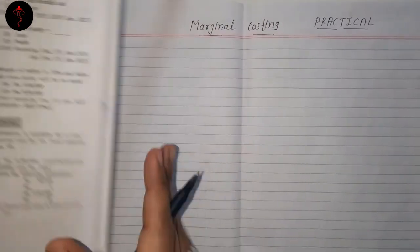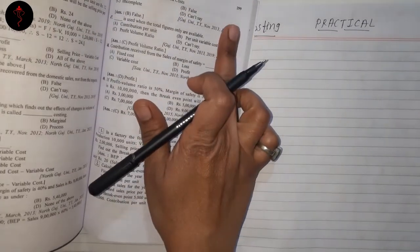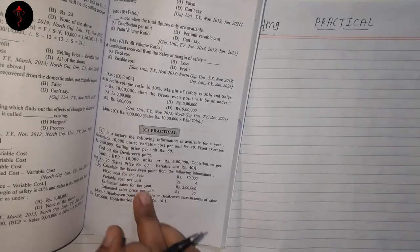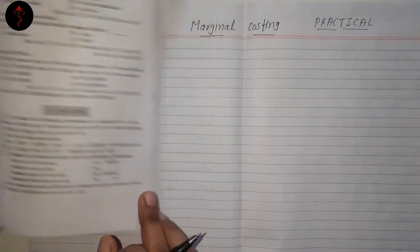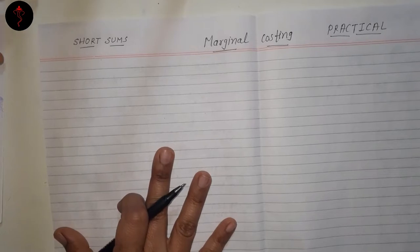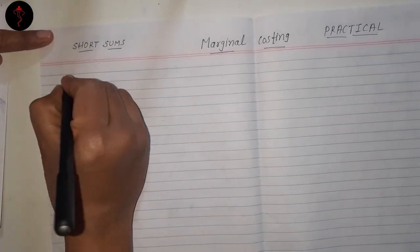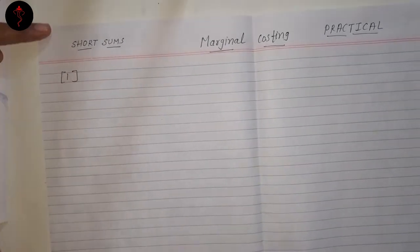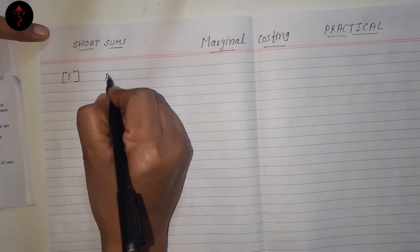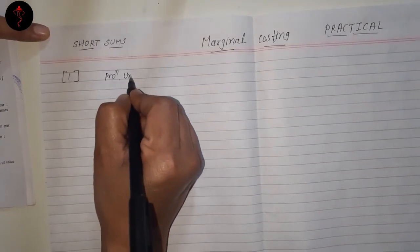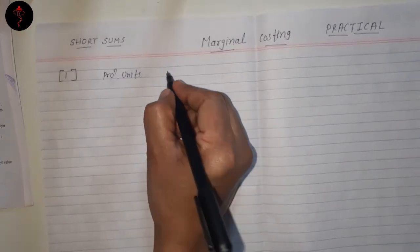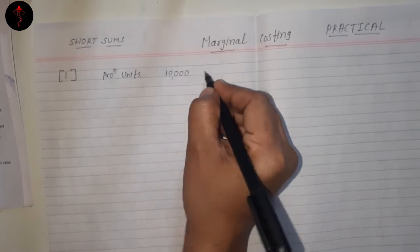In that we have our first sum on page number 299. We are doing both the first and second sums. The information we have given, we will write in the short sum. Production units: 10,000 units.